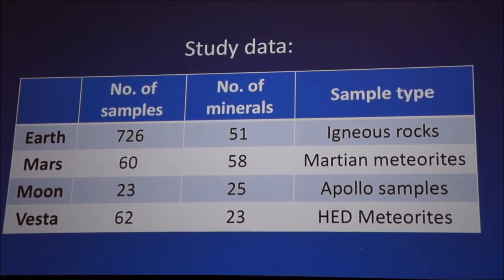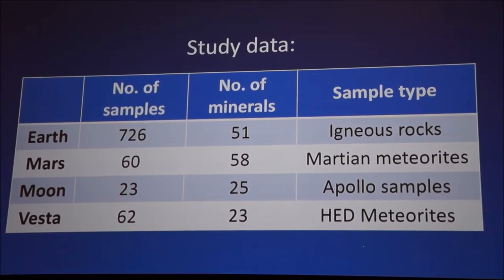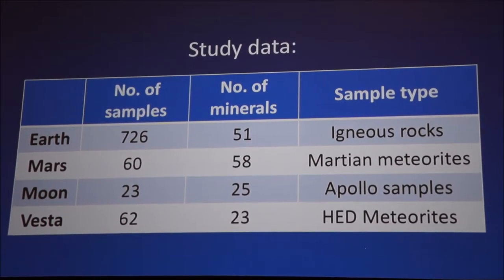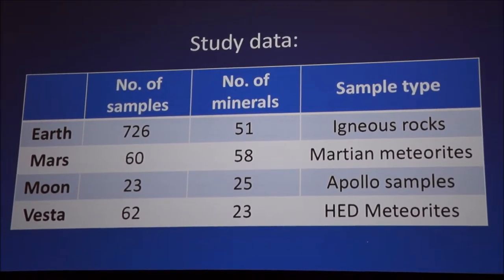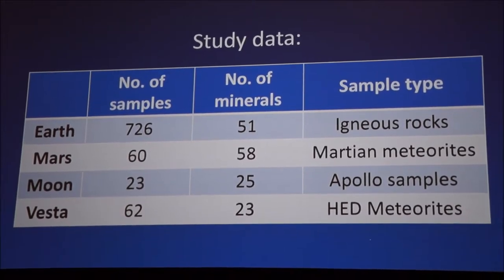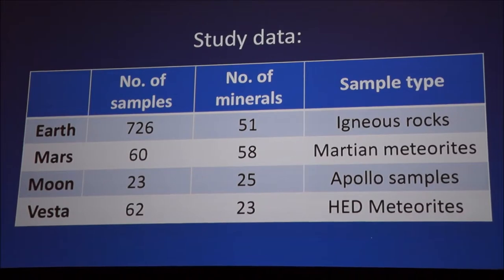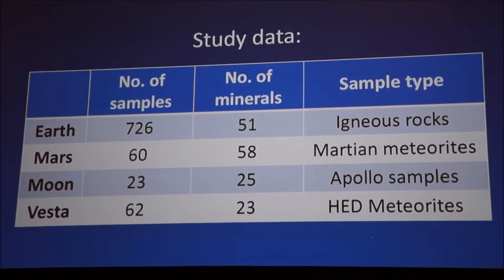For Mars, obviously we're using Martian meteorites. We'd eventually like to be able to use ChemCam data, but right now we want to stick to minerals that are more likely in equilibrium rather than the sedimentary rocks we're looking at in Gale Crater. And then for the Moon, obviously we're using the Apollo samples, and for Vesta we have the HED meteorites.